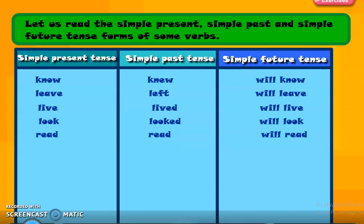Students, note that for the verb 'read': in simple present tense it is spelled 'read' and pronounced 'reed'. In simple past tense the spelling is the same — 'read' — but the pronunciation changes to 'red'. And in future tense it is 'will read'. Both spellings look the same, but the pronunciation is different: present is 'reed', past is 'red'.